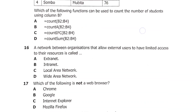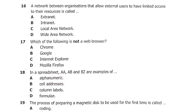Question 16: a network between organizations that allows external users to have limited access to their resources is called — A: extranet, B: intranet, C: LAN (local area network), or D: wide area network. The answer is A — extranet.